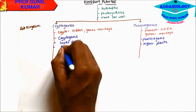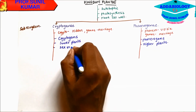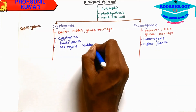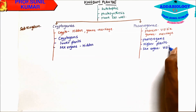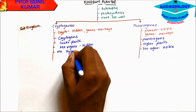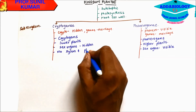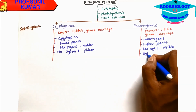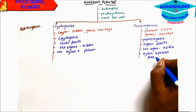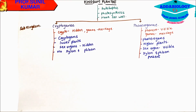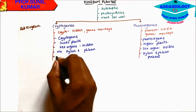In Cryptogamae, the sex organs are hidden or concealed, while in Phanerogamae the sex organs are visible. In Cryptogamae, there is no Xylem and Phloem, whereas in Phanerogamae they have well-developed Xylem and Phloem. In Cryptogamae, there is no flower, fruits, or seeds.